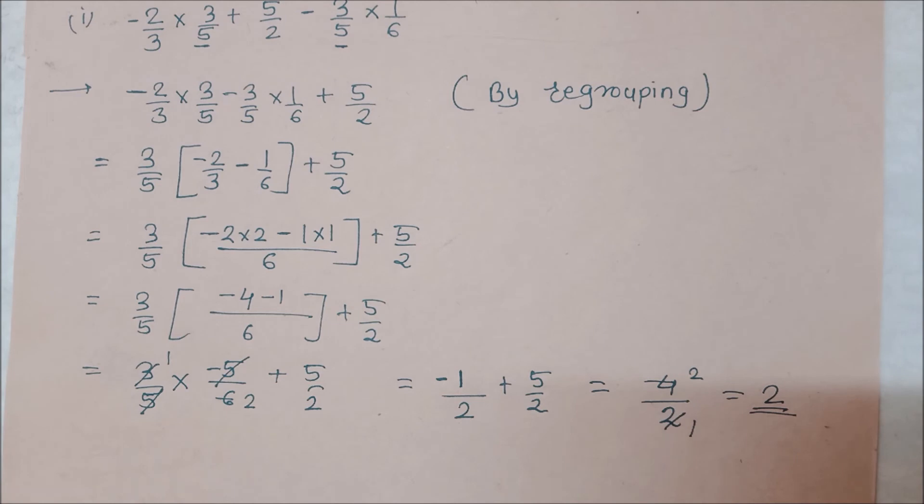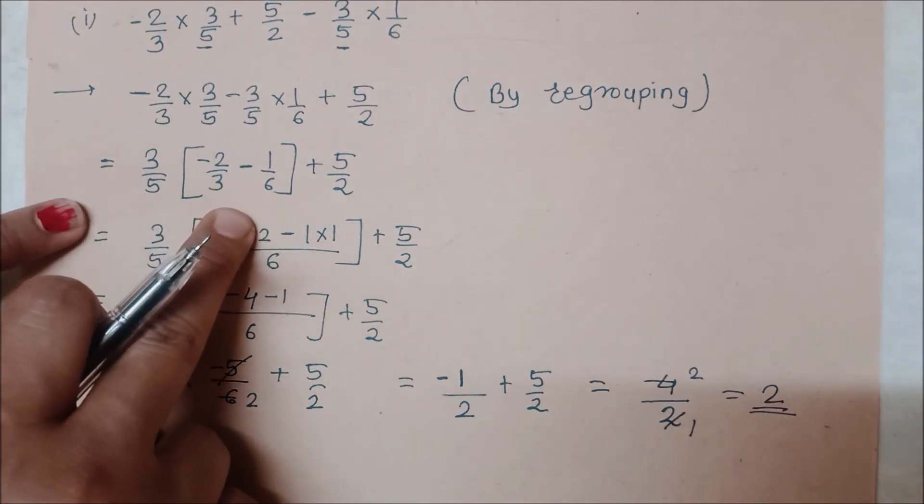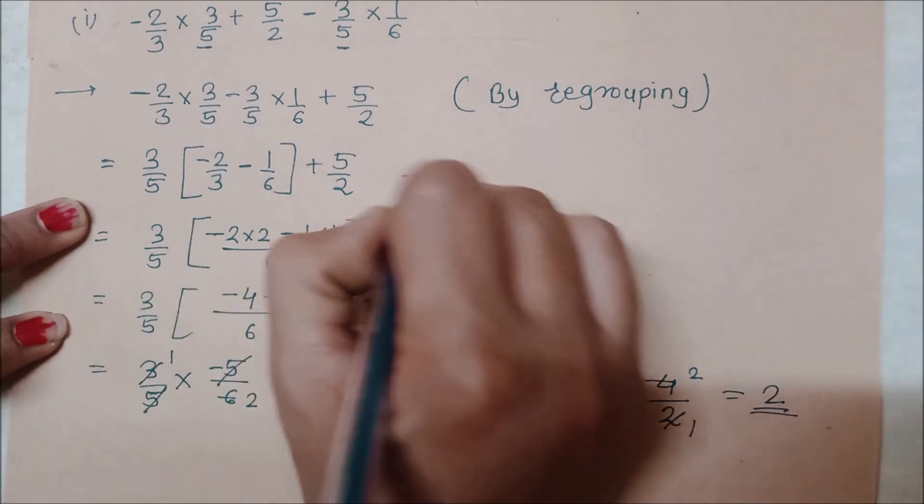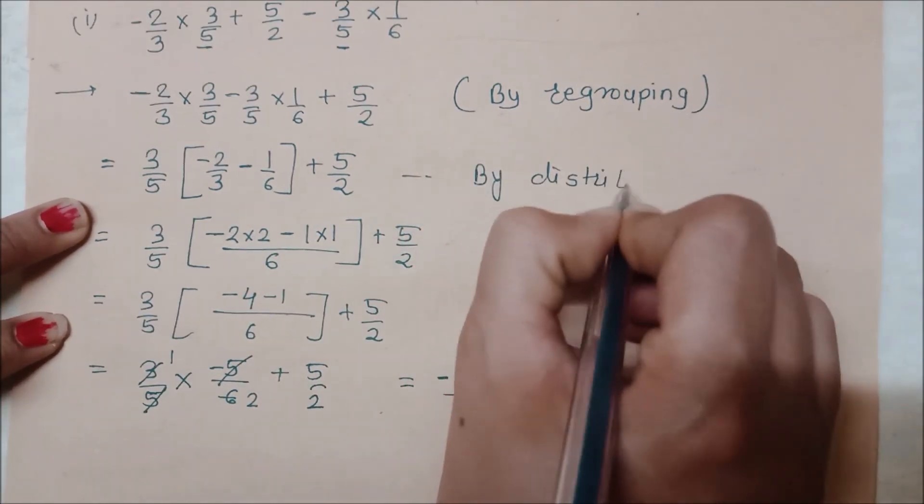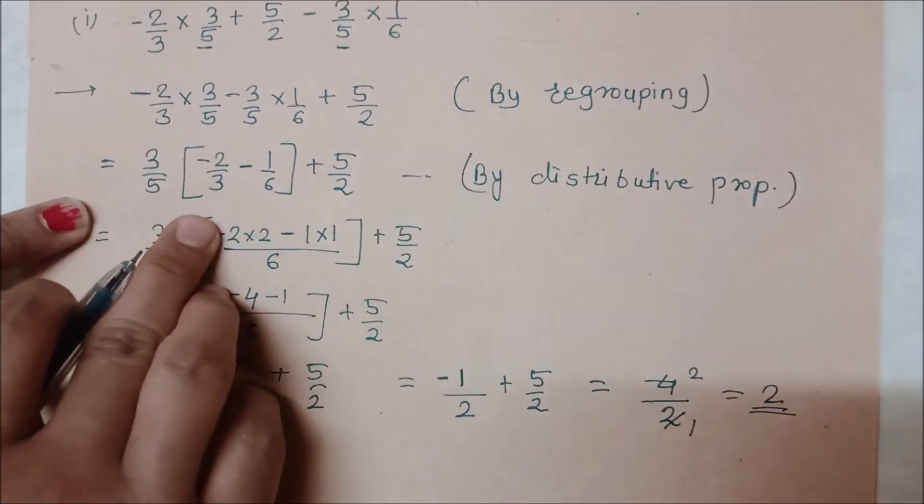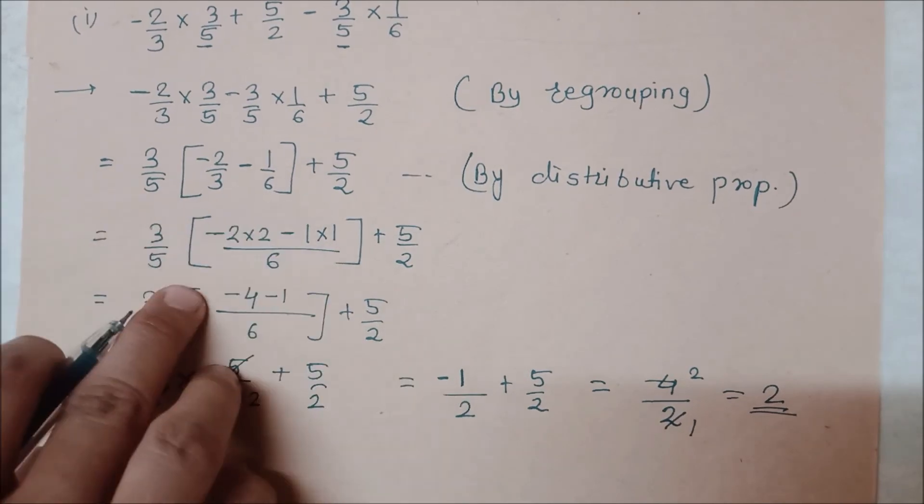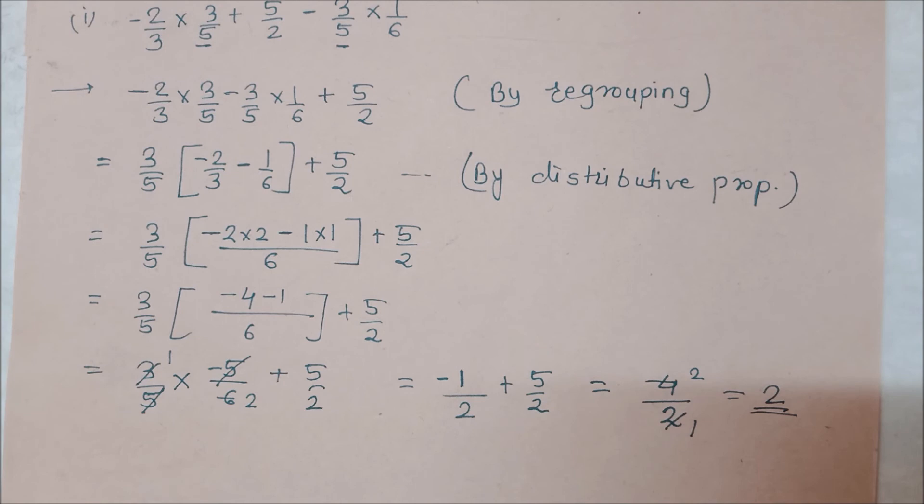Now here, what did we have to do? Which property, we should know which appropriate property we used. Here we used the distributive property. By distributive property, what did we do? We distributed it, meaning what we did is that these numbers which were there, we multiplied them together. First we brought them together, took the common factor out, and then applied distributive property and solved it.